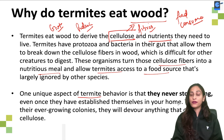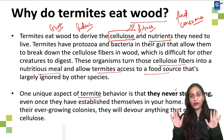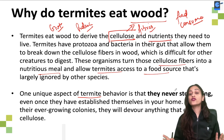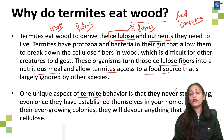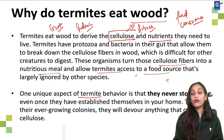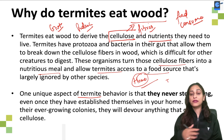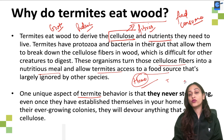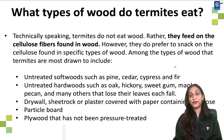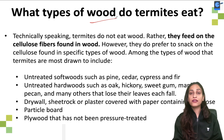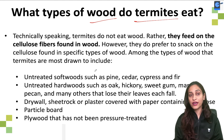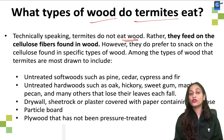A unique thing about termite behavior is that they never stop eating — they keep on eating. Once they have established their home colony, it is very difficult to stop them because their colonies keep increasing and cellulose keeps getting degraded and decomposed. Different types of wood are termite favorites technically.